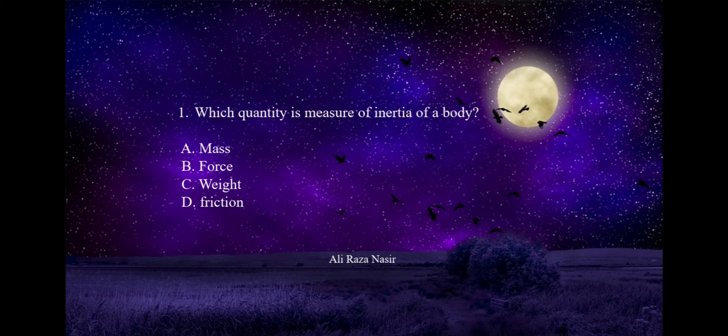Our first MCQ is: which quantity is the measure of inertia of a body? Option A is mass, option B is force, option C is weight, option D is friction. We know that inertia is related with mass. The greater the mass of a body, the greater its inertia — they are directly related. Inertia is the property of mass. So option A is correct.